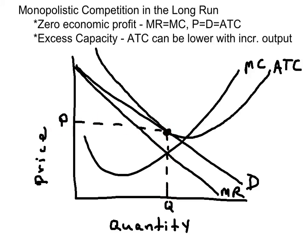The trickiest part about sketching out this model is the average total cost curve. ATC is U-shaped, so we start above the price, make sure the price is equal to the ATC, and then it continues to fall and reach its minimum at the marginal cost curve, and then we rise to complete the U-shape.